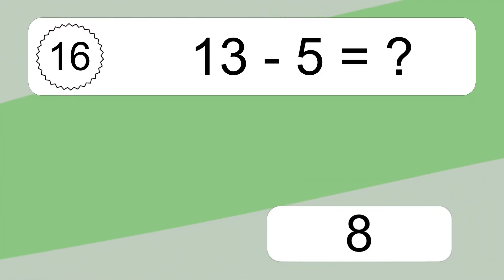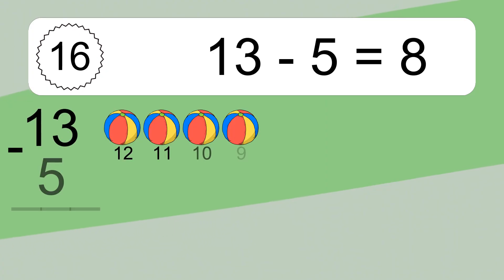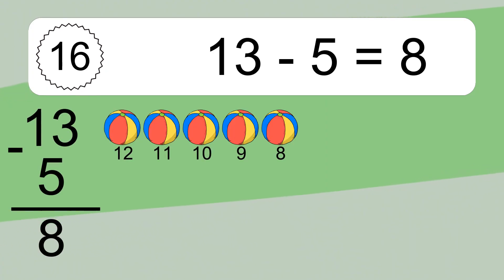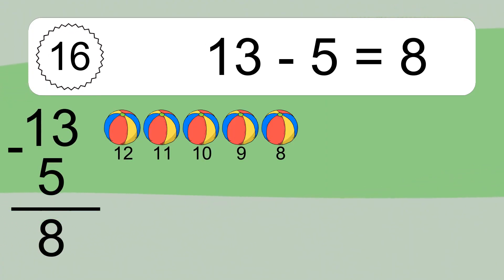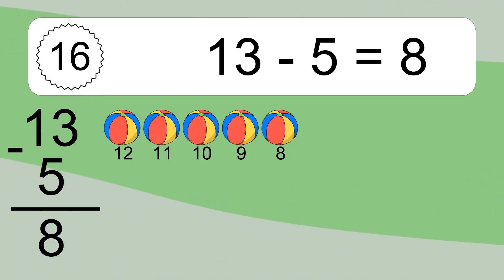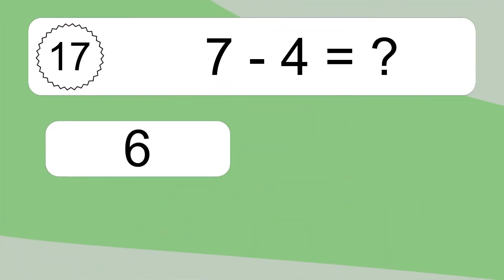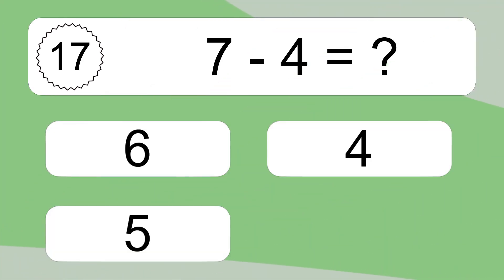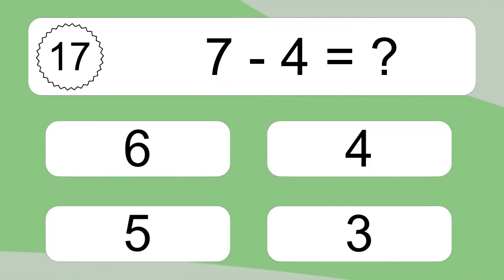13 minus 5 equals 8. Let's count it: 12, 11, 10, 9, 8. 7 minus 4 equals what?